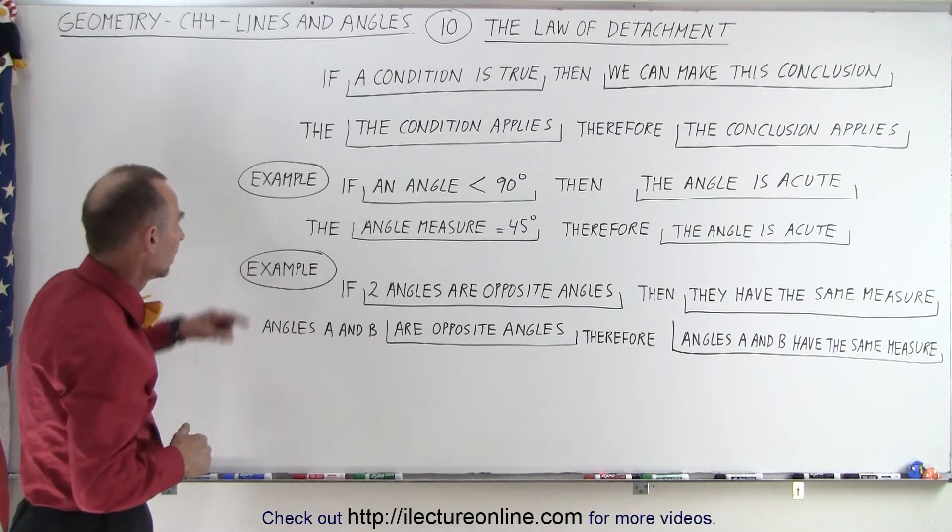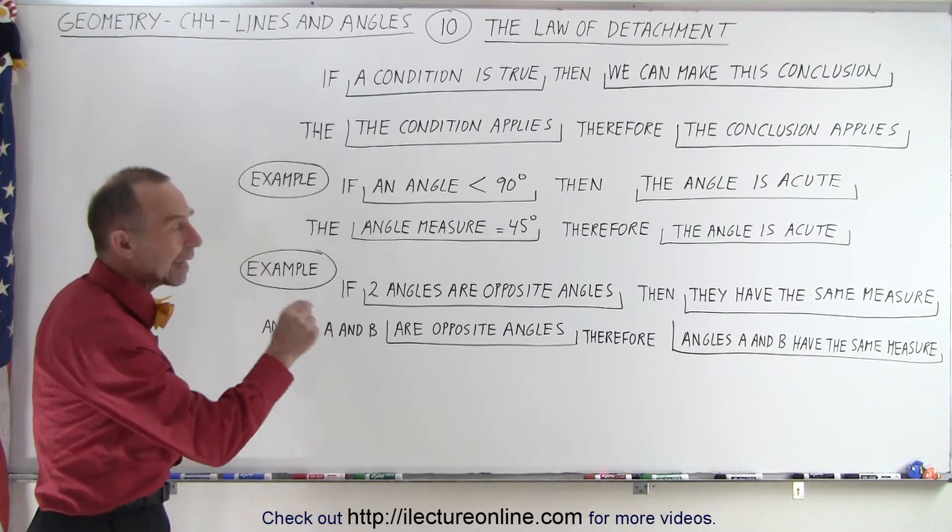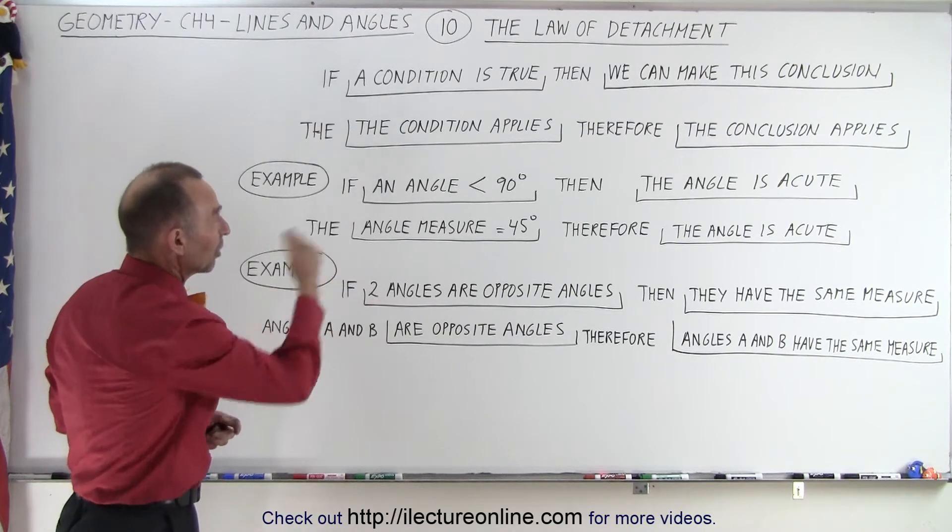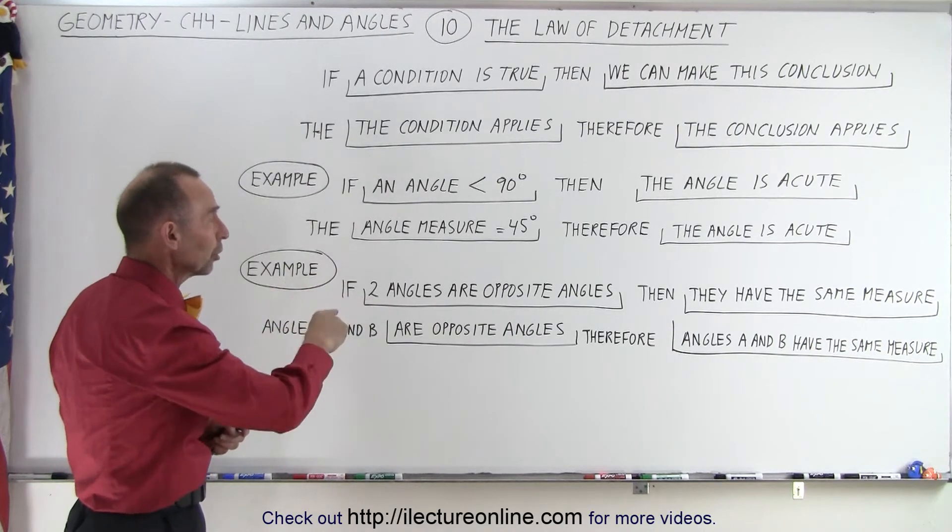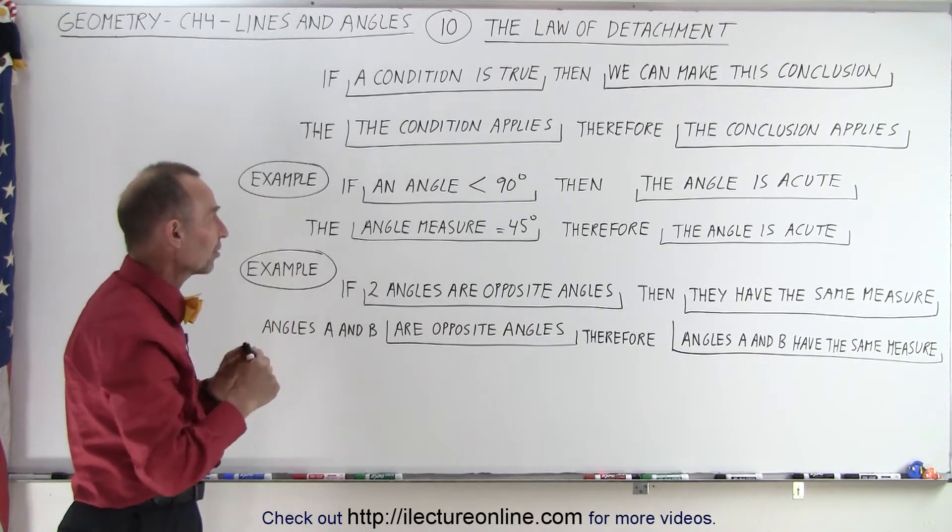So here's an example of that. If an angle is less than 90 degrees, then the angle is acute. If we measure an angle to be 45 degrees, therefore we can conclude that the angle is acute, and that is what we call the law of detachment.